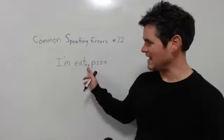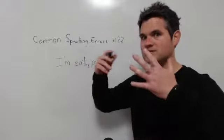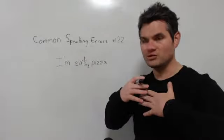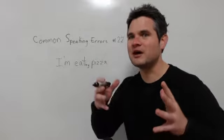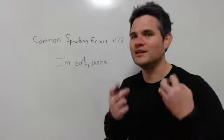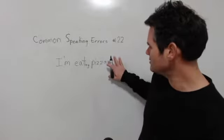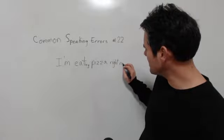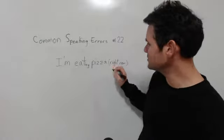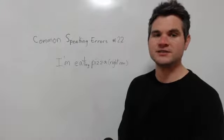So just by adding that ING at the end and I'm, because we're using to be here, because that is how we're existing, that's how we're existing right now, we're eating pizza. So I'm eating pizza, and if you want to, at the end of the sentence you can say I'm eating pizza right now. It's not necessary but it's optional.